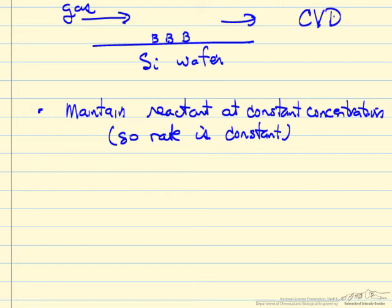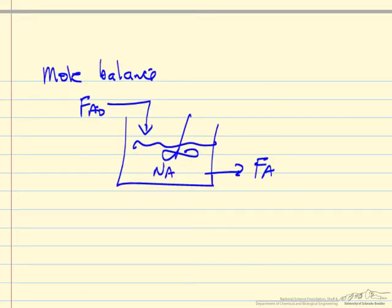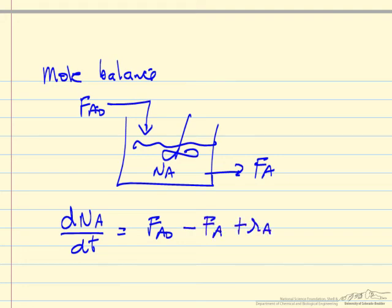If we look at the mole balance for a semi-batch reactor, so we're looking at just one component balance here, where we're adding A. In general, we might be removing A. We have accumulation, the number of moles of A in the reactor at any given time changes because A is being added. There's flow rate to some molar flow rate, moles per time. A is leaving, and there's some rate of reaction times volume.